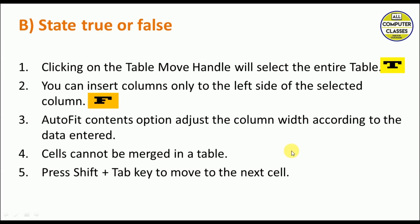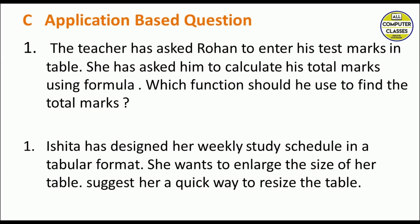AutoFit Content option adjusts the column width according to the data entered — yes, it is True. Cell cannot be merged in a table — that is wrong, we can merge cells, so it is False. Pressing Shift and Tab key moves to the next cell — that is wrong, because Tab key takes us to the next cell and Shift+Tab brings the cursor to the previous cell, so it is False.